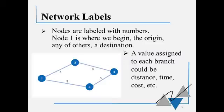Nodes are labeled with numbers just as a label, so these are labeled 1, 2, 3, and 4. Node number 1 is where we begin. That's the origin. Any of the other nodes are destination nodes. A value is assigned to the branch, to the path, and that could be the distance, it could be the time it takes to get there, the cost it takes to move something there, etc.